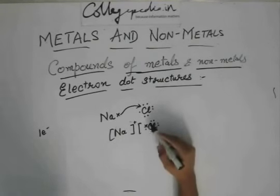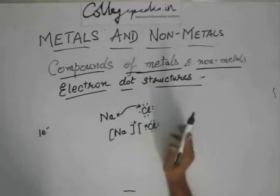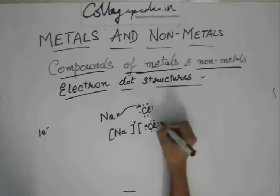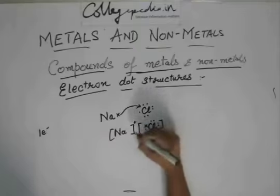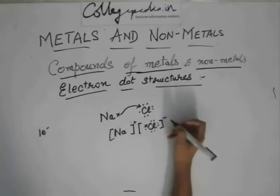And Cl has these seven electrons plus an electron gained from sodium. So, now this cross indicates that this electron actually belong to sodium. And these dots, the electrons, actually belong to chlorine. So, this will give Na plus and then, subsequently, Cl minus.